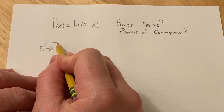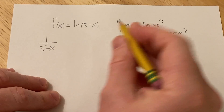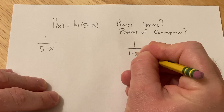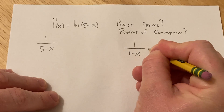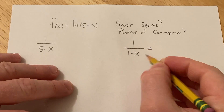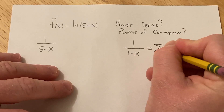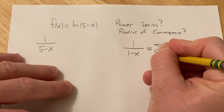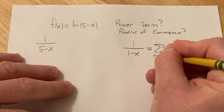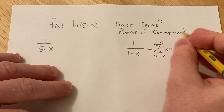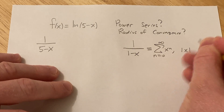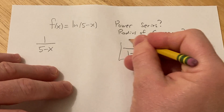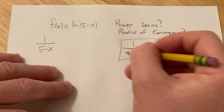To do that we're going to use the function we know: if you have 1 over 1 minus x, this equals the infinite sum as n runs from 0 to infinity of x to the n, and this is true if the absolute value of x is less than 1. This is the key formula we're going to use.